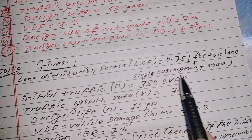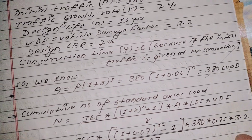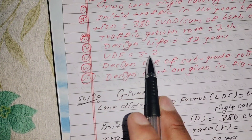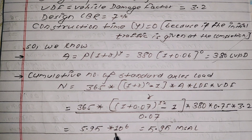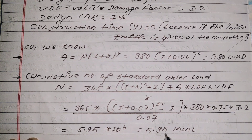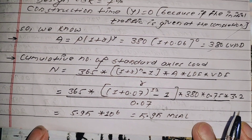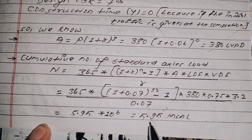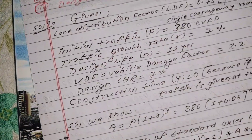LDF = 0.75 for two-lane single carriageway. Vehicle damage factor VDF = 3.2. Substituting all values into the formula, the result is N = 5.95 × 10^6, which equals 5.95 million standard axles (MSA). So the design traffic is 5.95 MSA.